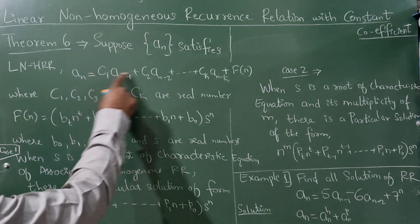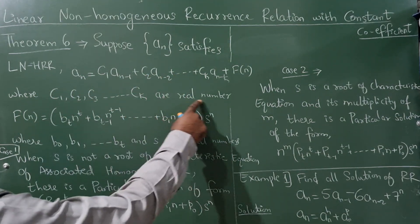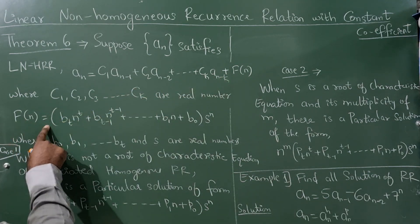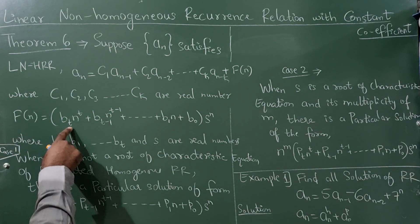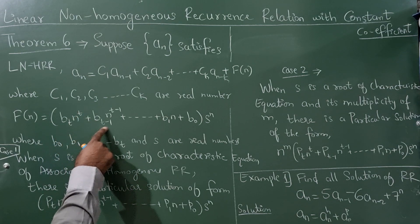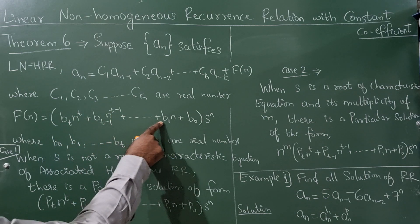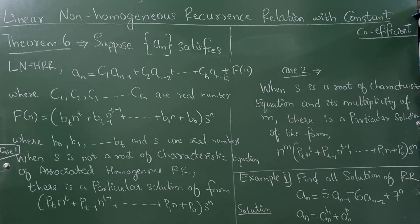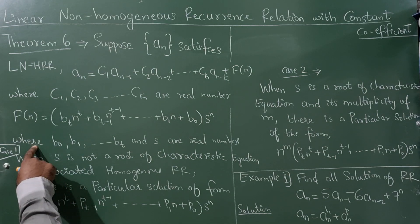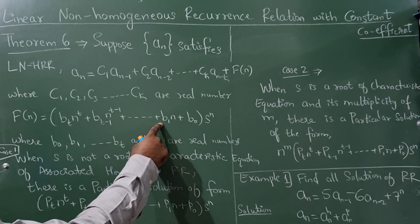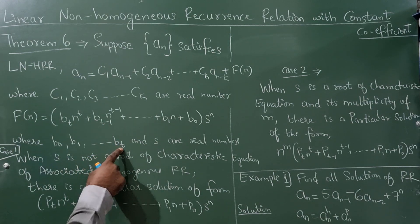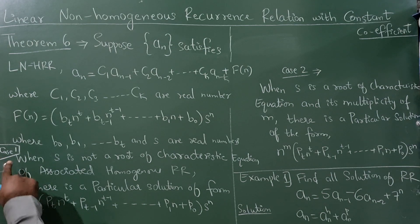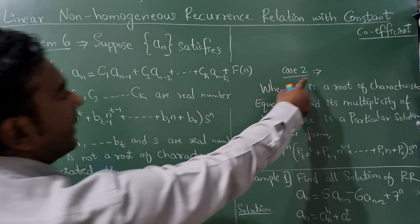Here c1, c2, c3, up to ck are real numbers. f(n) is equal to (bt·n^t + b(t-1)·n^(t-1) + ... + b0) · s^n, where b0, b1, through bt, and s are all real numbers. There are two cases: Case 1 and Case 2.